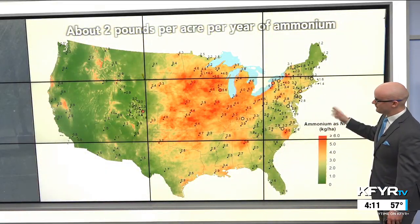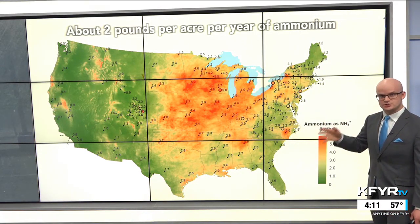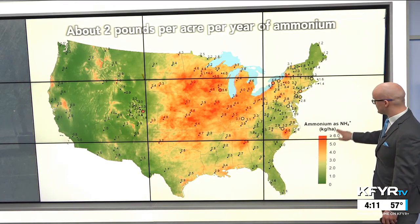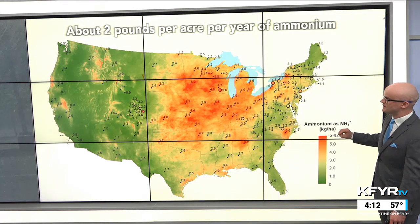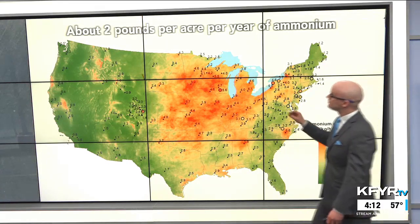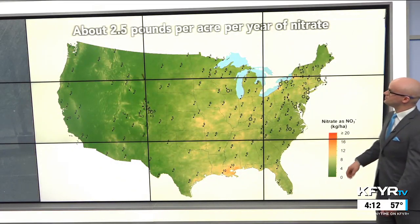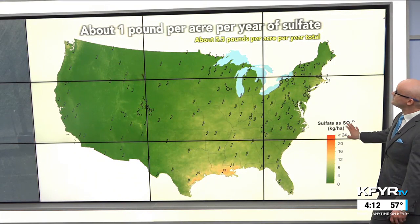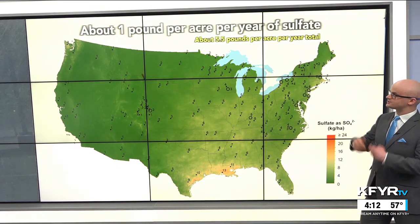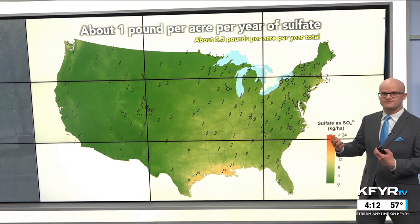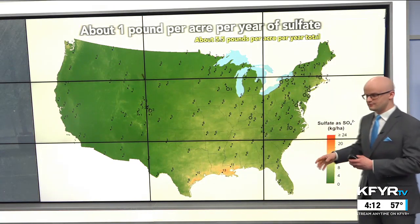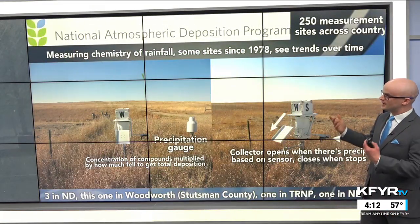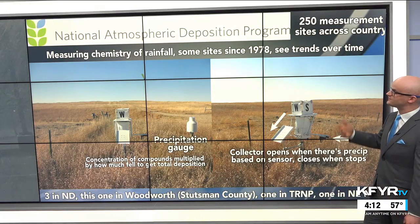An organization measures these compounds and the deposition of them — how much falls down to the ground throughout the year. For ammonium (NH4), a nitrogen-based compound, we get about 2 pounds per acre per year across North Dakota. With nitrate (NO3) we get about 2.5 pounds per acre per year, and with sulfate about 1 pound per acre per year. Adding that up, that's only about 5.5 pounds per acre per year — measured in kilograms per hectare and converted to pounds per acre.